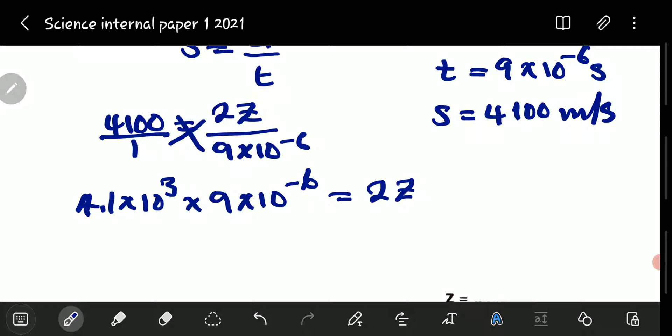Here, what I'm going to do is use a bit of mathematics. Since we've got 10 to the power, we're going to say 4.1 multiplied by 9, then times 10, because these are indices. We are multiplying, so they add. So, it will be 3 plus negative 6, which gives me negative 3.